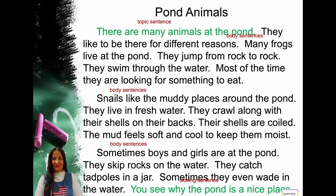Here's another paragraph: 'Pond Animals.' 'There are many animals at the pond' — that's our topic sentence. 'They like to be there for different reasons' — body sentences. 'Many frogs live at the pond. They jump from rock to rock. They swim through the water. Most of the time they are looking for something to eat.' 'Snails like the muddy places around the pond. They live in fresh water. They crawl along with their shells on their backs. Their shells are coiled. The mud feels soft and cool to keep them moist.' 'Sometimes boys and girls are at the pond. They skip rocks on the water. They catch tadpoles in a jar. Sometimes they even wade in the water.' 'You see why the pond is a nice place to be?' — that's our closing sentence.